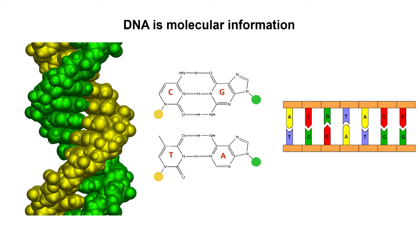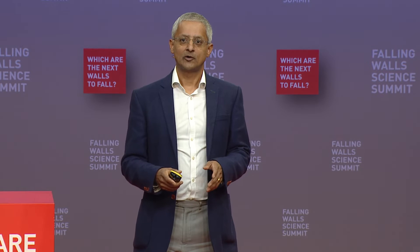DNA has four building blocks, which we often abbreviate to G, C, T, and A. Those building blocks are arranged on a strand of DNA in a particular order.